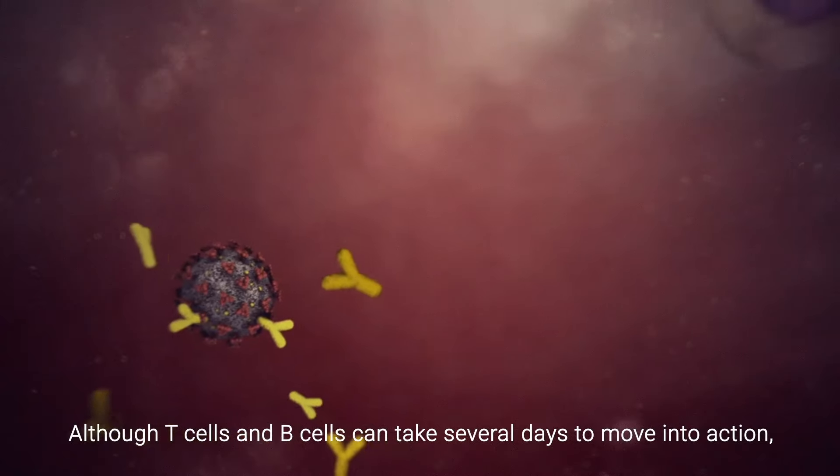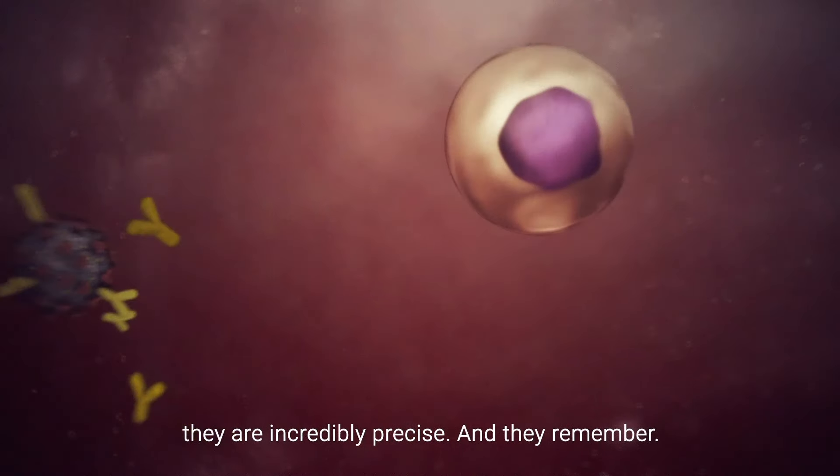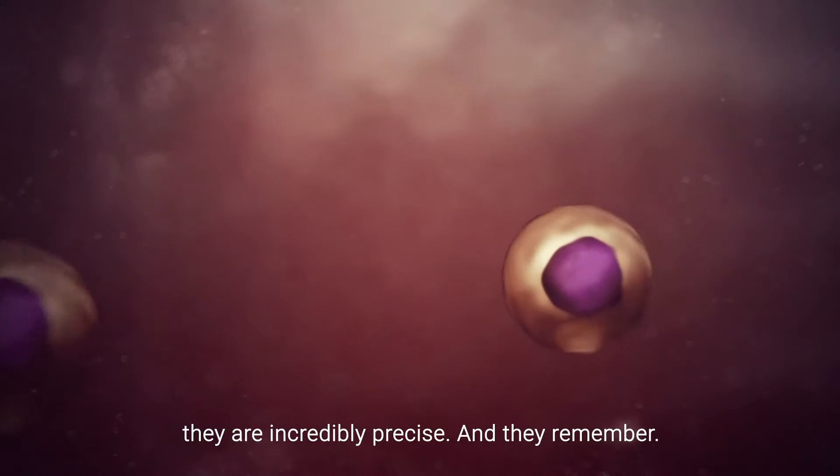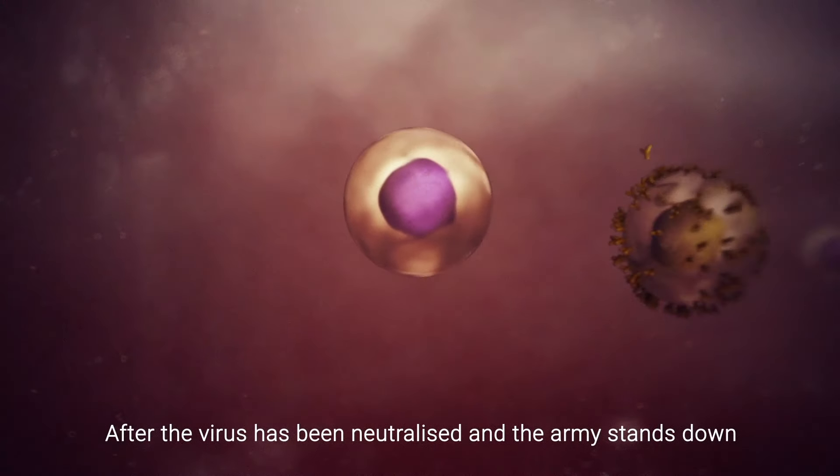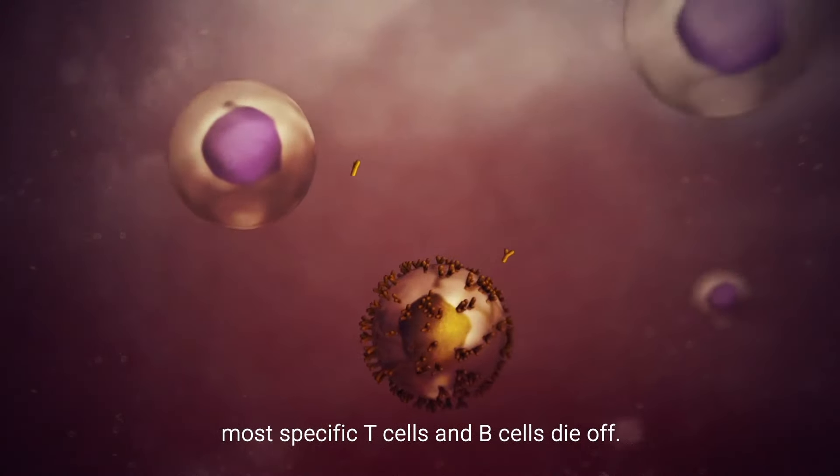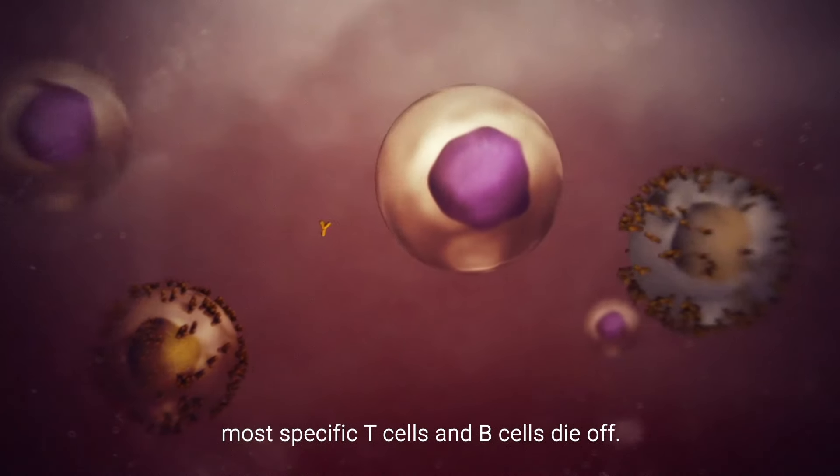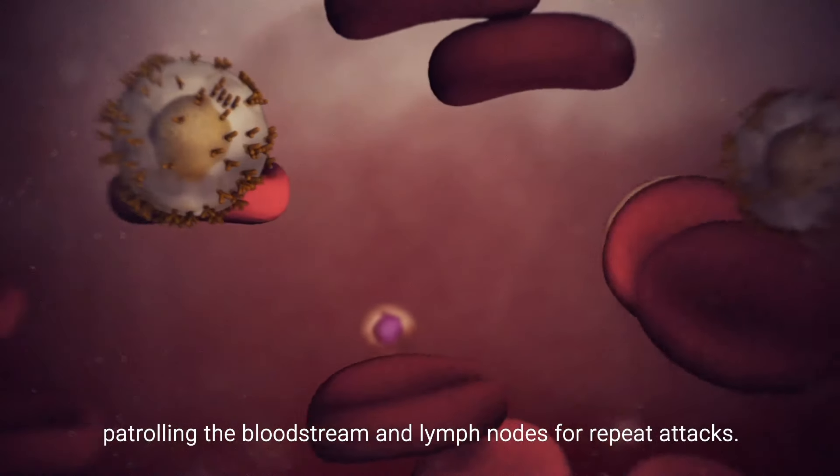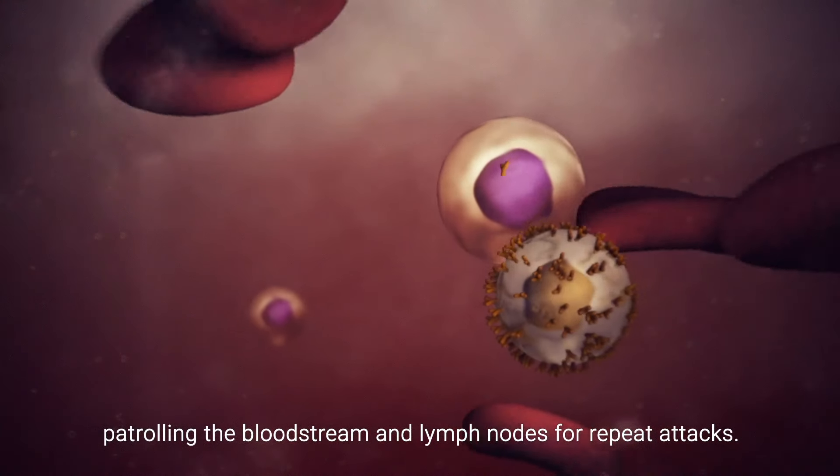Although T cells and B cells can take several days to move into action, they are incredibly precise and they remember. After the virus has been neutralized and the army stands down, most specific T cells and B cells die off. But a small fraction stay alert, patrolling the bloodstream and lymph nodes for repeat attacks.